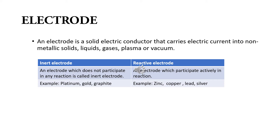What is electrode? An electrode is a solid electric conductor that carries electric current into non-metallic solids or liquids or gases or plasma or vacuum. For example zinc electrode, copper electrode, platinum electrode, calomel electrode — all these are the examples of electrodes. So an electrode is a solid electric conductor which carries electric current into non-metallic solids or gases or liquids.